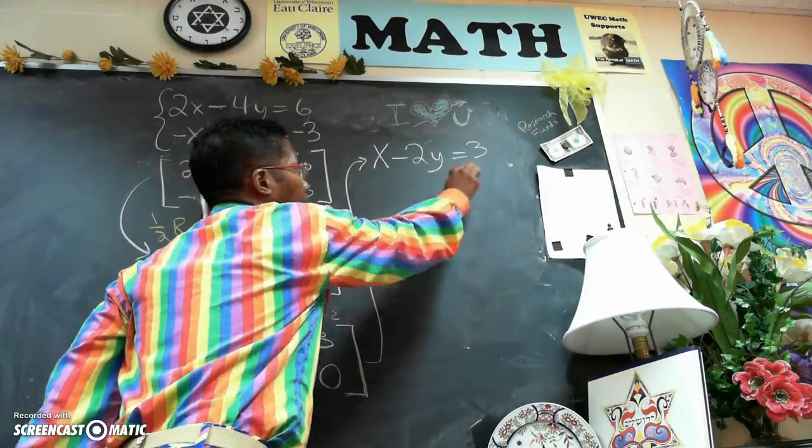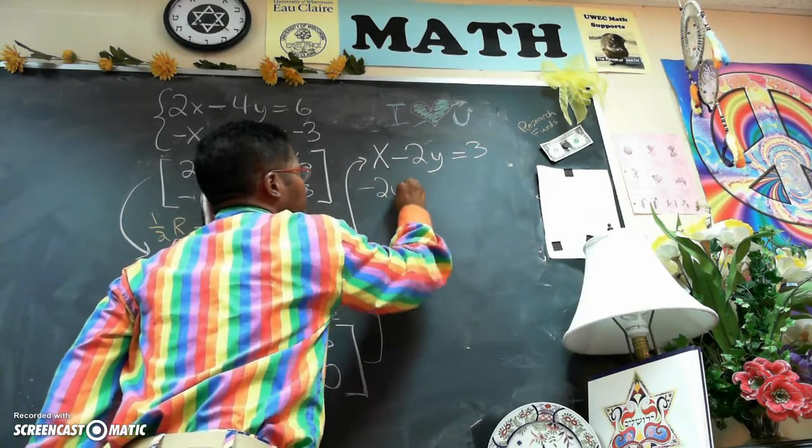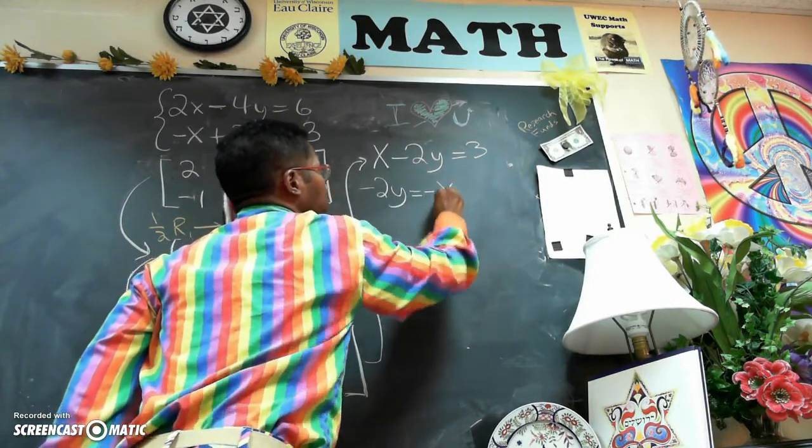So we have x minus 2y equals 3. I subtract x from both sides. So I have negative 2y equals negative x plus 3.